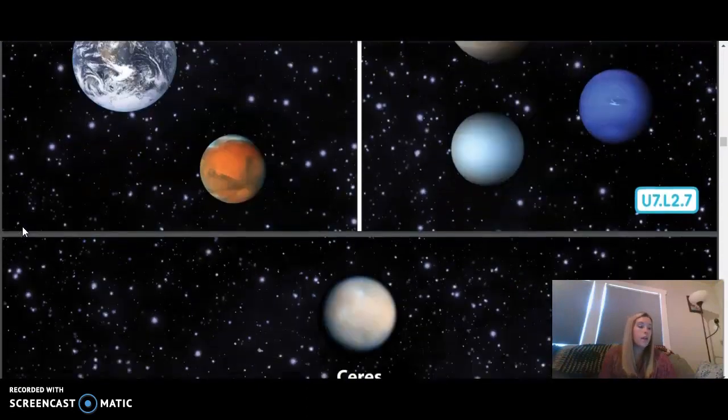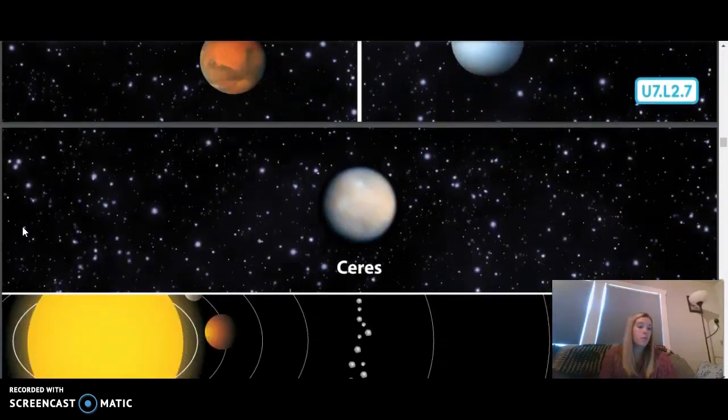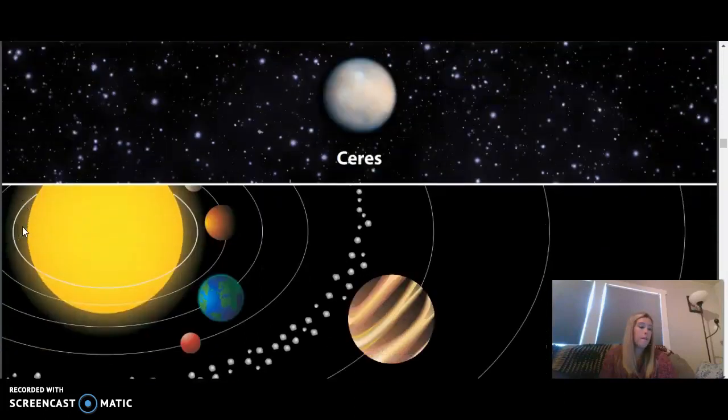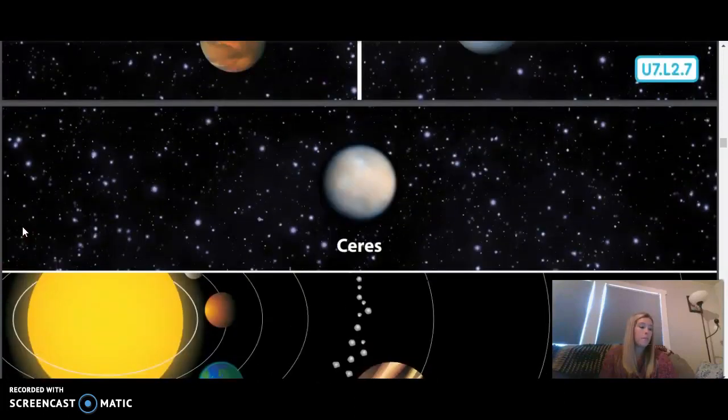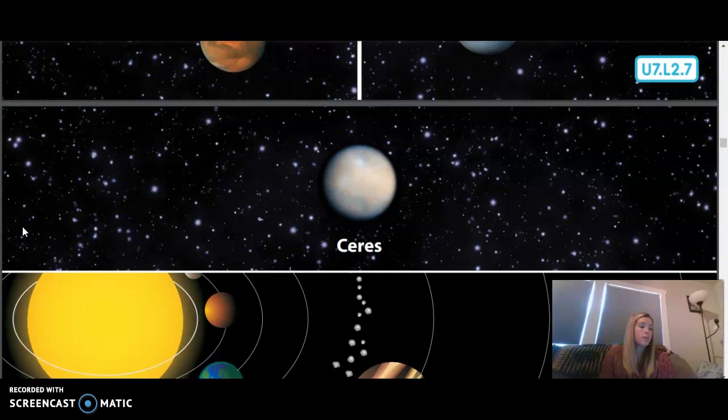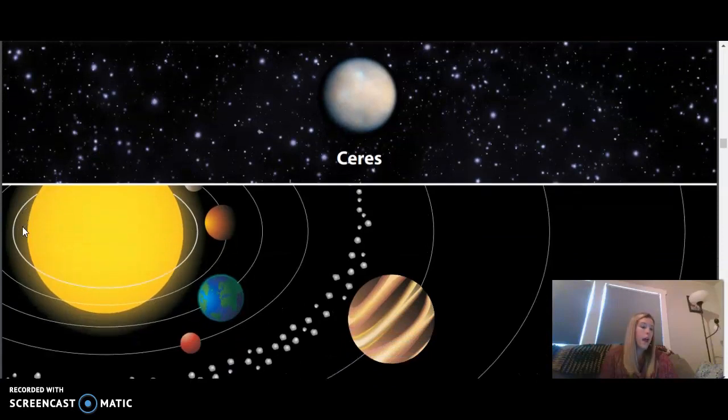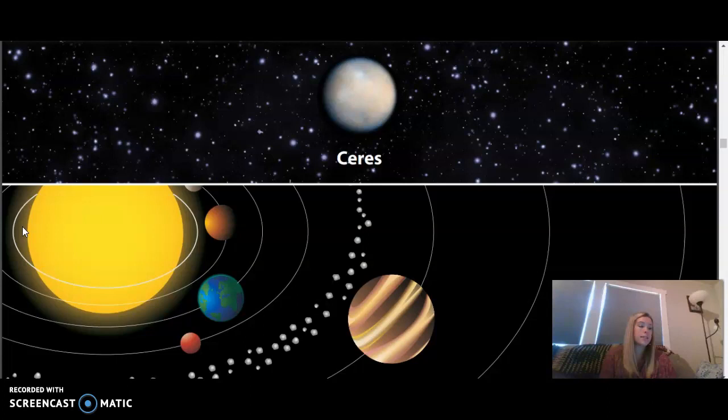Besides the sun, the eight major planets, their moons, and the dwarf planets, there are also other neighbors that help make up the neighborhood we call our solar system. These include asteroids, meteoroids, and comets. An asteroid is a space rock that does not have an atmosphere. An asteroid is too small to be classified as a planet because it does not have enough mass or substance to clear other objects and debris from its orbit around the sun. And it is not round.